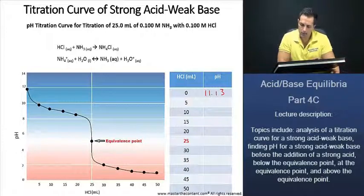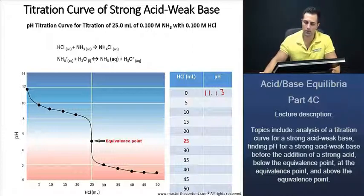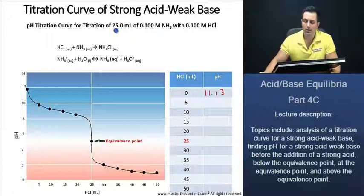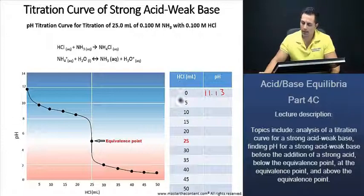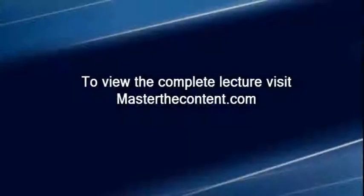Now, what we'll do next is let's calculate the half equivalence point. That's what we'll do next. Because we're going to have 25 milliliters of our base here, ammonia, we know that at the half equivalence point, we're going to have 12.5 milliliters of hydrochloric acid added.